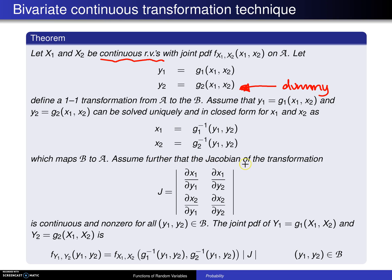Assume further that the Jacobian of the transformation is the following. J is the determinant, so these bars right here represent the determinant of that 2 by 2 matrix. And this is dx1 dy1, dx1 dy2, dx2 dy1, and dx2 dy2.